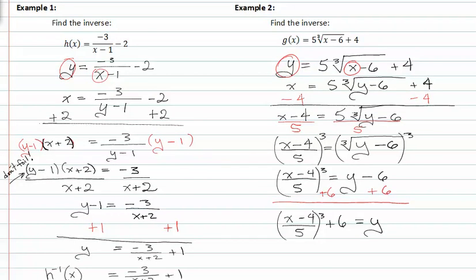It's a good reminder to think about what y actually is. It's what we swapped with x, and so this is technically the inverse function. So g inverse of x is equal to x minus four over five raised to the third power plus six.